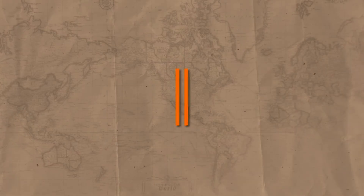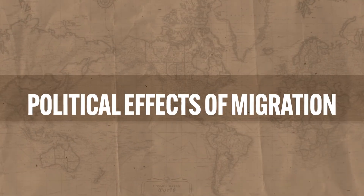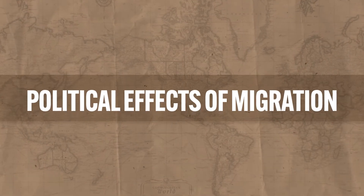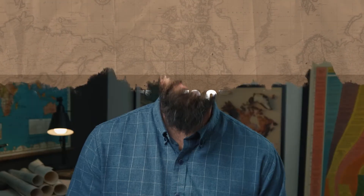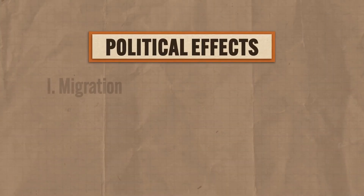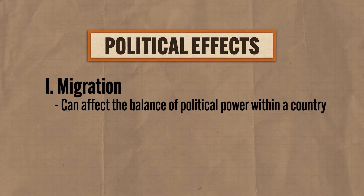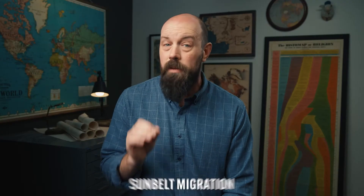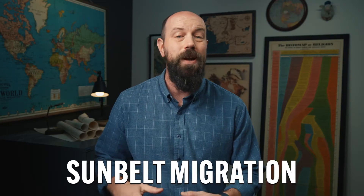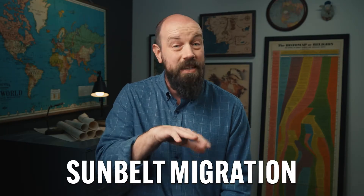So if you're ready to get them brain cows milked, let's get to it. Let's begin with the political effects of migration, and we'll consider those effects both on the migrants' location of origin and their destination. First, migration can affect the balance of political power within a country, as it did in the Sun Belt migration in the United States from about 1950 to 1980.